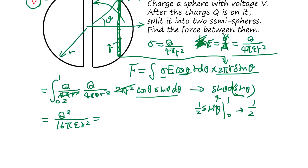We use V. V equals Q over C, so Q equals VC, which equals V times 4πε₀r.